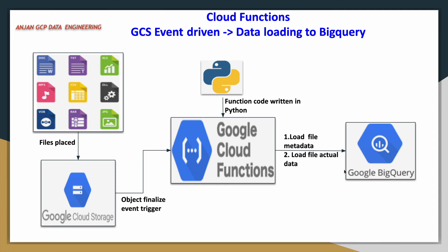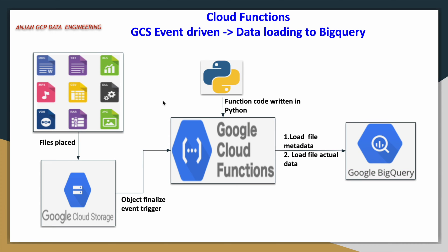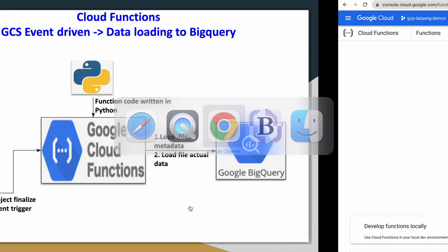In BigQuery, we are going to have multiple tables. For metadata related to the file and event, we'll have one table — whenever you upload a file into the Google Cloud Storage bucket, it will capture that metadata and write it into that table, appending on each subsequent upload. For the actual file data, for example file 1, it will create a table with the file 1 schema. For file 2, it will append the metadata and create another table with the file 2 schema. The CSV file schema will be auto-detected and tables created based on the uploaded file.